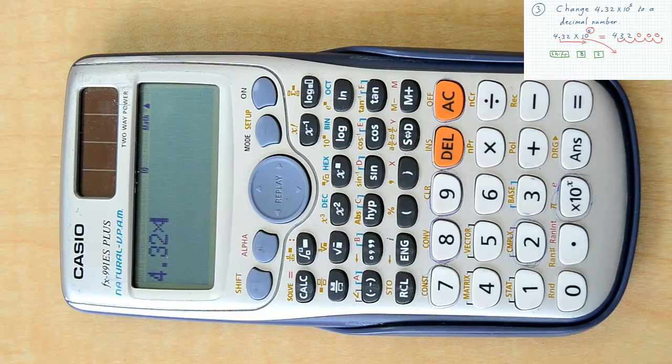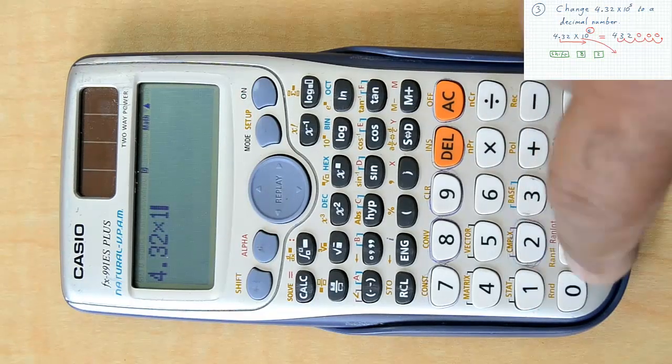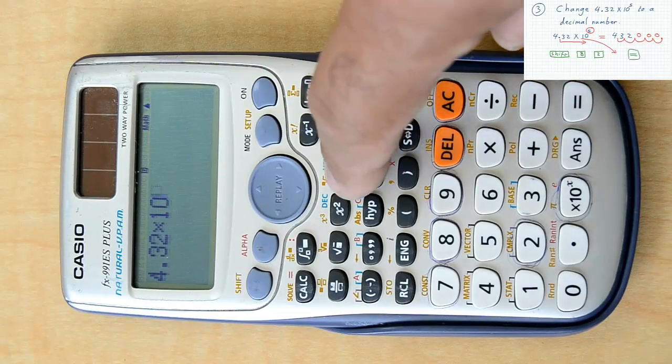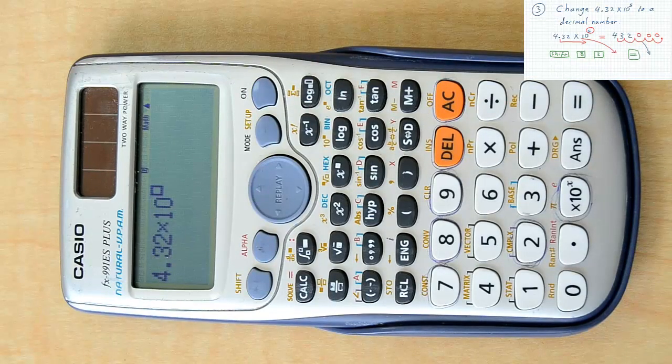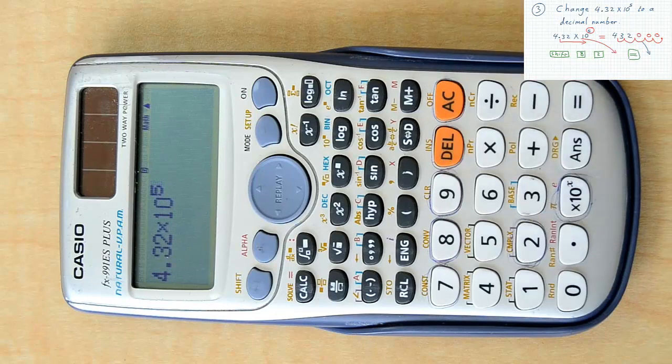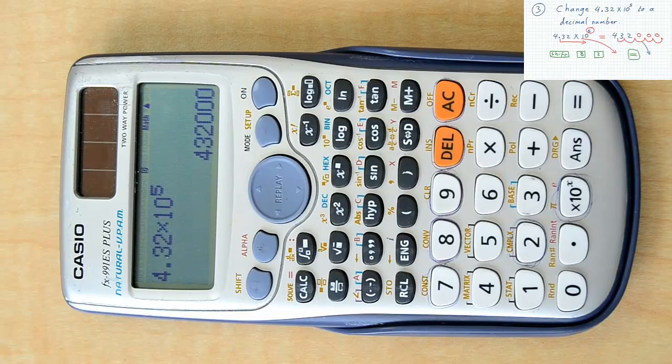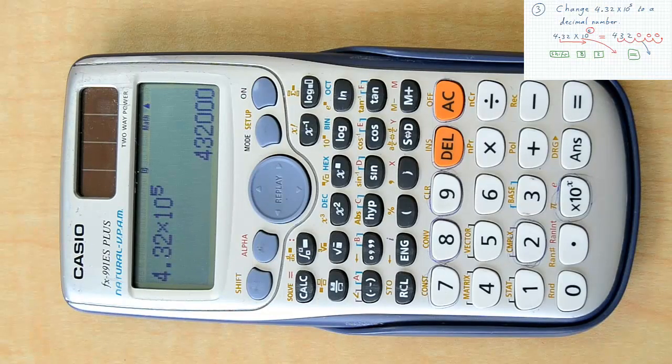notation number as it is in the calculator, then press equal, and you will have your answer on the screen. So this is the way to change from a scientific notation number to a decimal notation number.